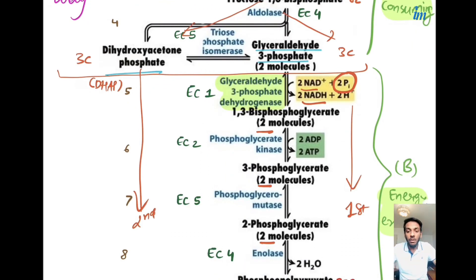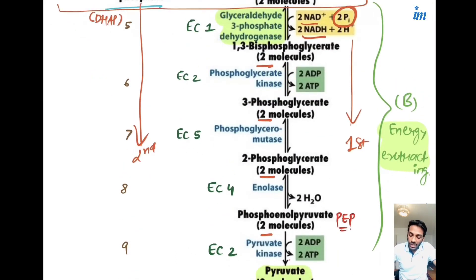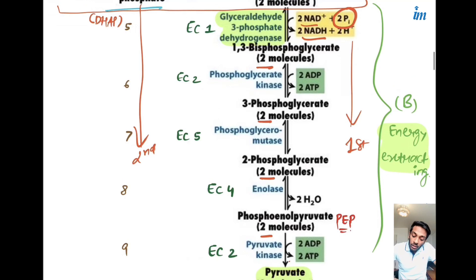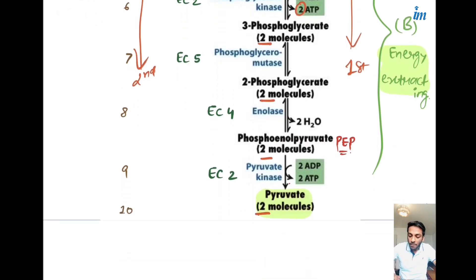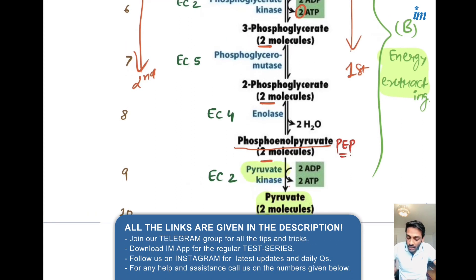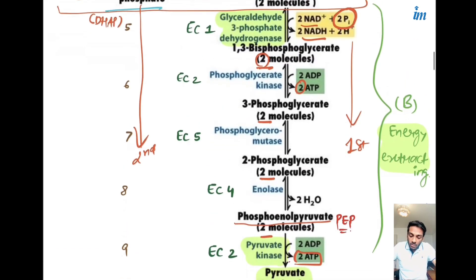Everything you see will be doubled because the same cycle runs twice — once for each three-carbon molecule. The first step where ATPs are formed is where 1,3-bisphosphoglycerate is converted into 3-phosphoglycerate, producing one ATP per molecule, so two ATPs total for two molecules. Similarly in the last step, phosphoenolpyruvate (PEP) is converted into pyruvate by the enzyme pyruvate kinase, again yielding one ATP per molecule, two ATPs total.